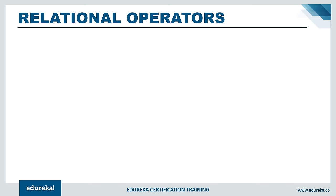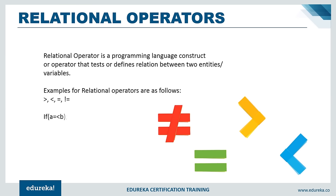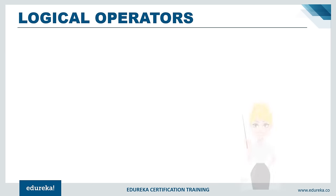Relational operators test or define the relationship between two variables. Examples include greater than (>), less than (<), equals to (==), and not equals to (!=). For example, if a = 10 and b = 20, you can use an if condition: if a <= b, a particular code segment will execute — this condition is true only if a is less than or equal to b.